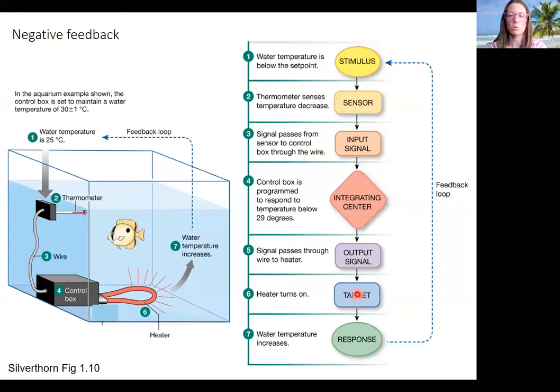That's our target or effector. It's going to have an effect. It's going to create a response, which is increase in water temperature. That increase in water temperature causes the loop to turn off. That is negative feedback. The response counteracts the stimulus. Notice that a low temperature results in an increase in temperature, which then turns off the system.